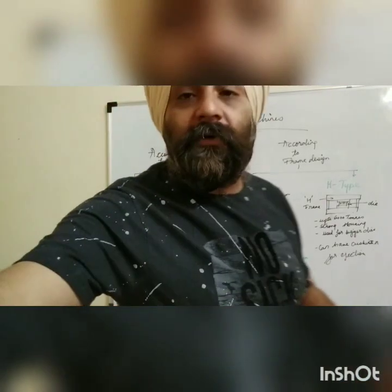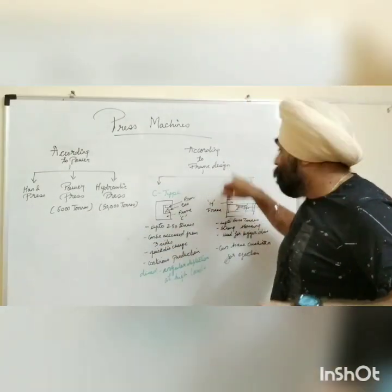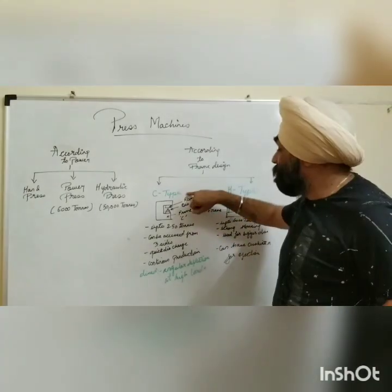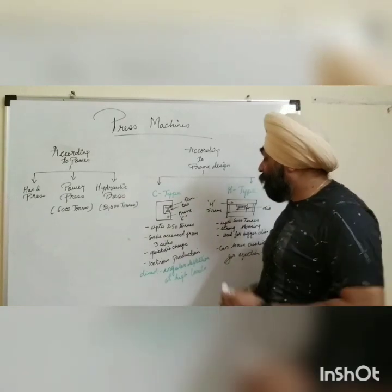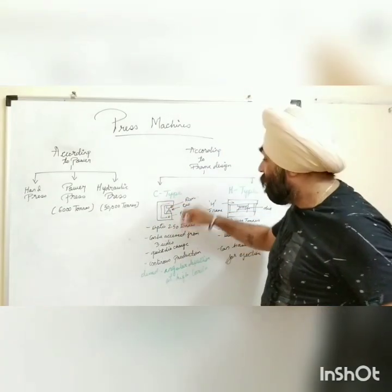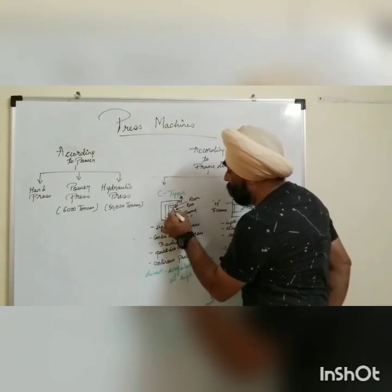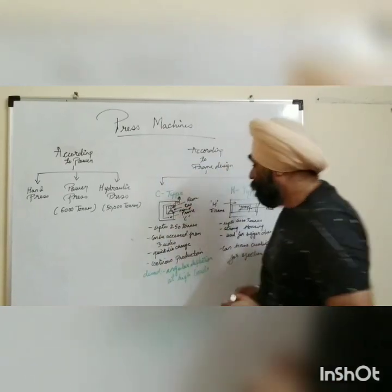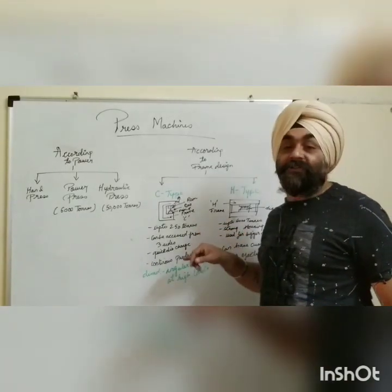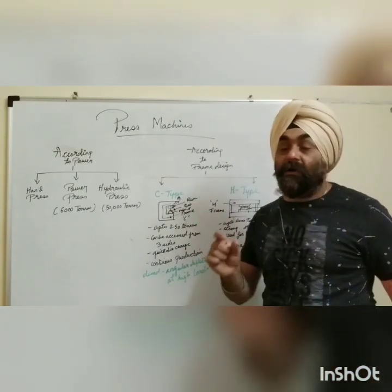If we go ahead with the other type of classification — that is, according to the frame design — we have two types: C-type press and H-type press. For the C-type press, the construction is shaped like a C. In the space between the C, we can put our die — this will be the moving die and this will be the fixed portion. These types of presses are used where the parts are small; they can have a maximum range of 250 tons, such as for small two-wheeler parts.